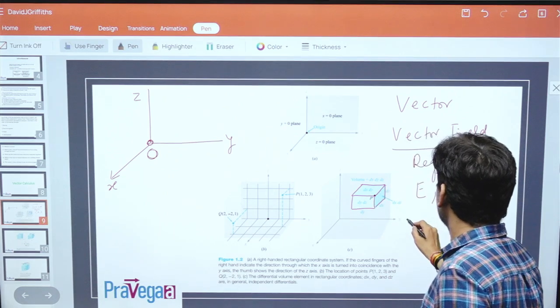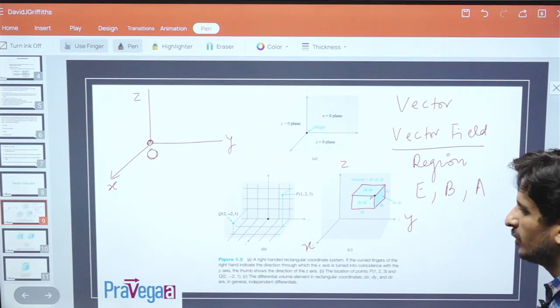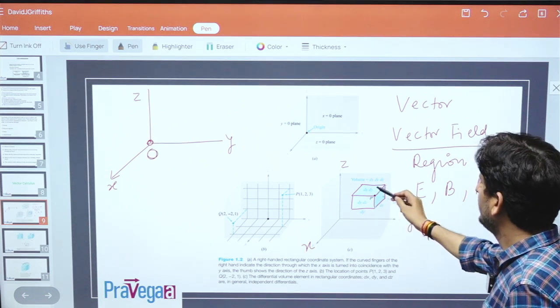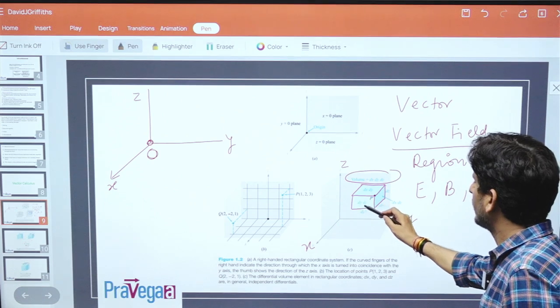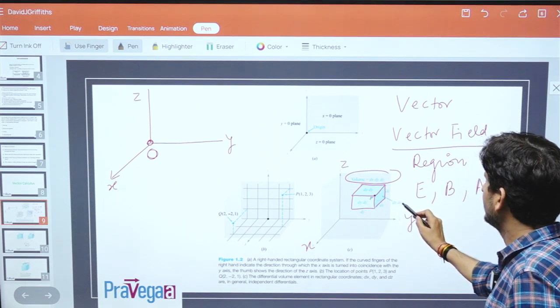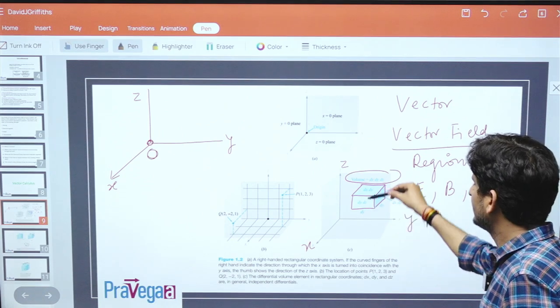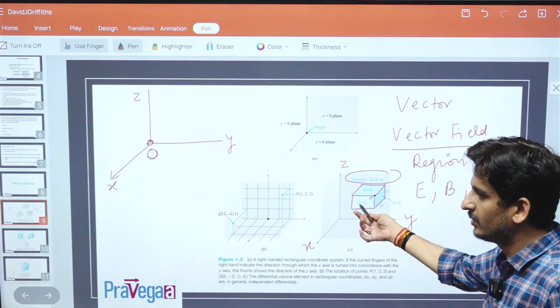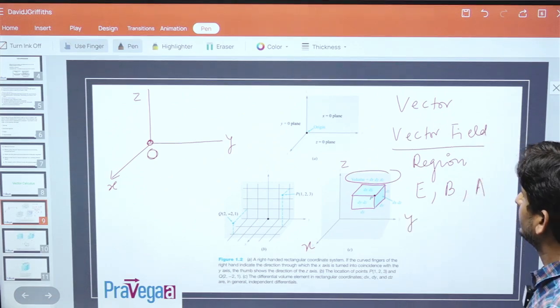This axis is y, this is z, and this is the x-axis. You can very easily see what will be the small volume: it will be dx dy dz. This area will be dy dz, this area will be dx dz, and this area will be dx dy. The bottom will also be dx dy with opposite sign. If you take area vector perpendicular to the area, the back side will be opposite in direction.